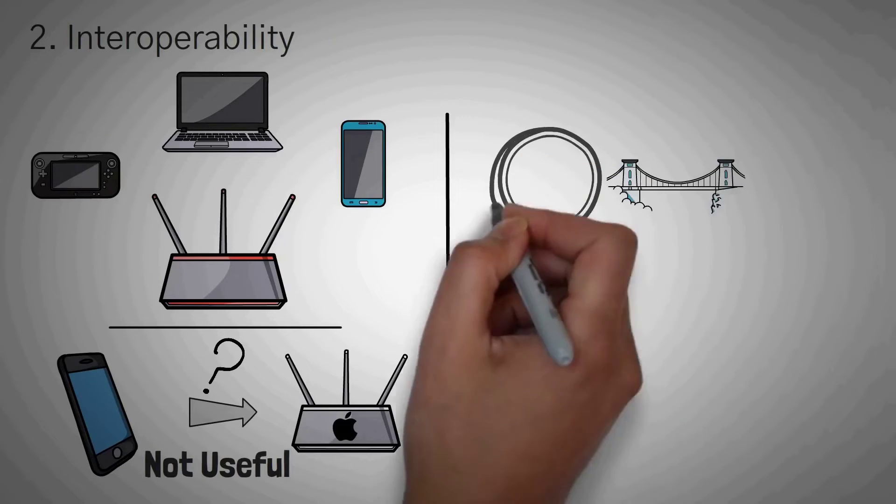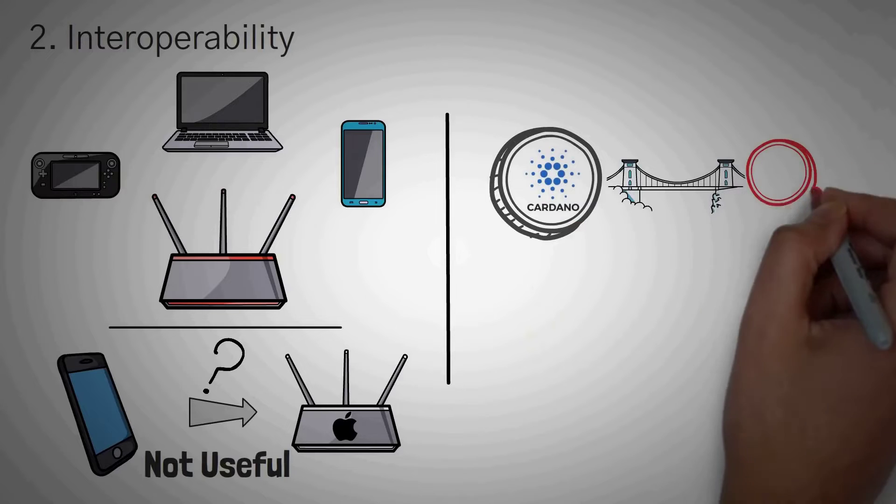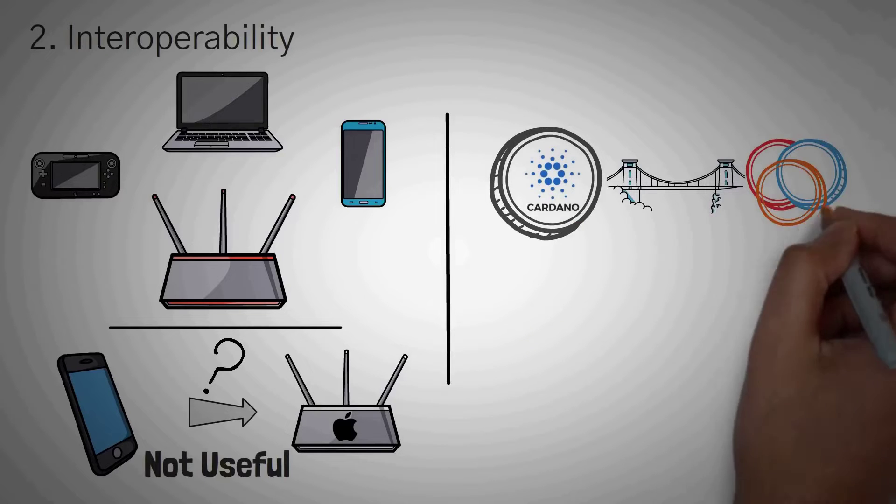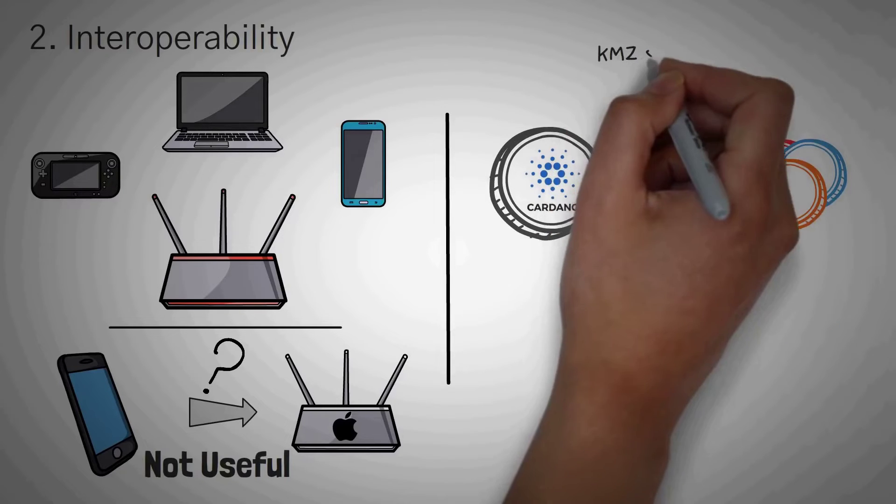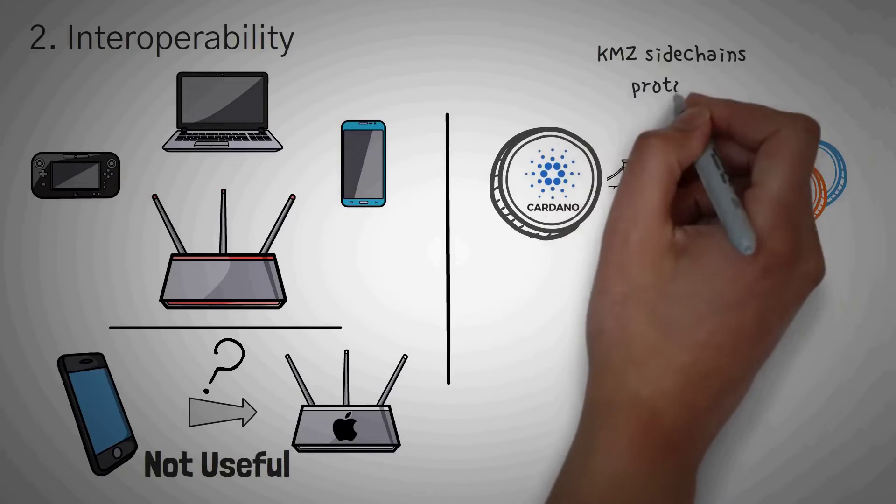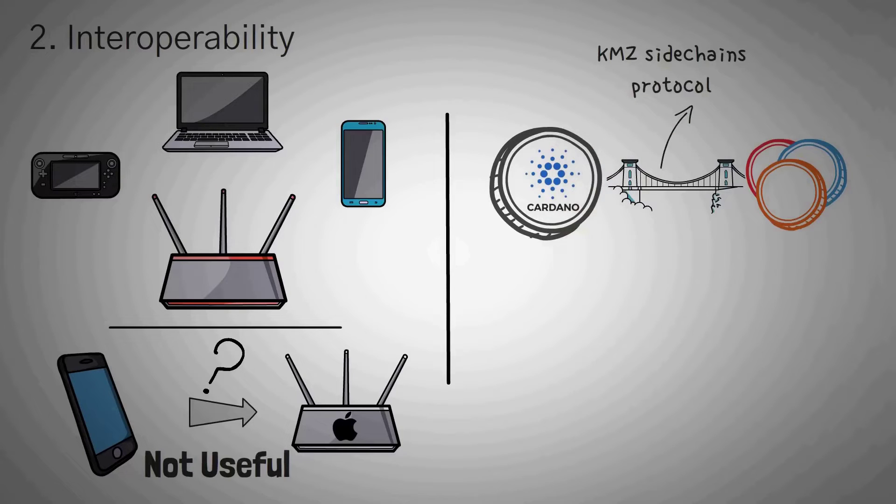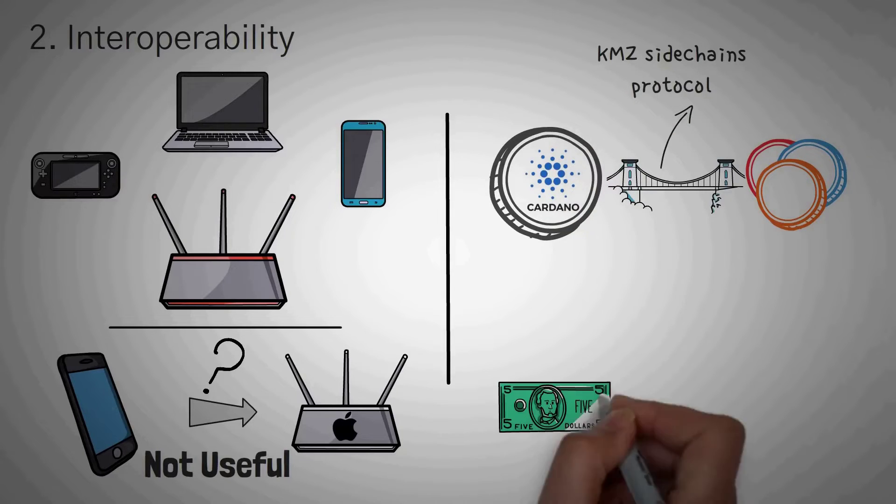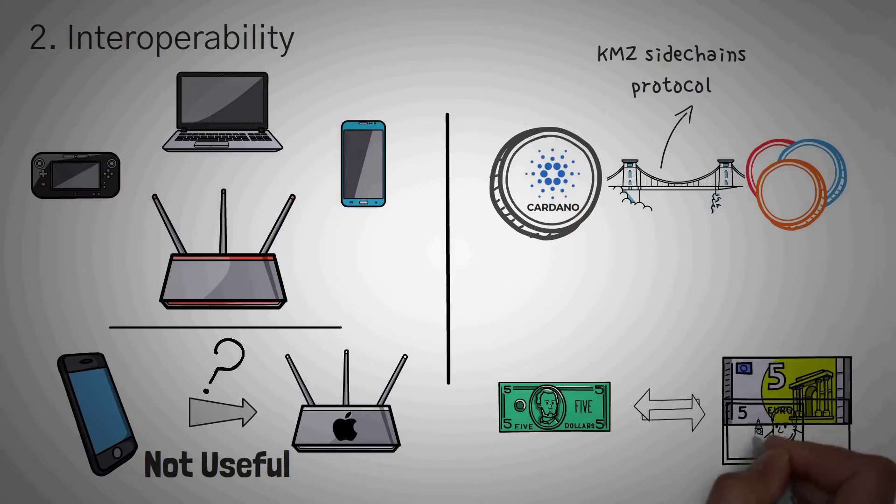So how does Cardano make sure that crypto doesn't suffer from the same problem? Well, it allows for people to easily bridge Cardano and other cryptocurrencies that use other blockchains by using something called the KMZ sidechains protocol. This is basically the crypto version of being able to easily exchange US dollars for Canadian dollars or Euros or some other cryptocurrency.